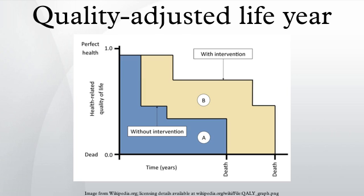According to Pliskin et al., the QALY model requires utility independence, risk neutrality, and constant proportional trade-off behavior. Because of these theoretical assumptions, the meaning and usefulness of the QALY is debated.